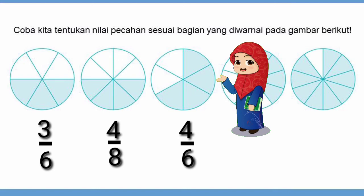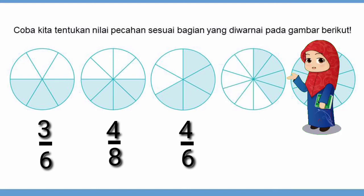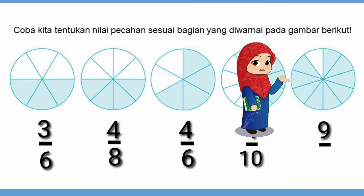Gambar keempat, seluruhnya ada 10 bagian dengan 4 diarsir, jadi 4 per 10. Gambar kelima, keseluruhan ada 10 bagian dengan 9 bagian diarsir, jadi 9 per 10.